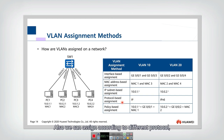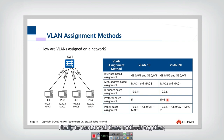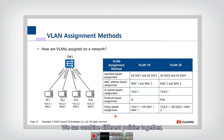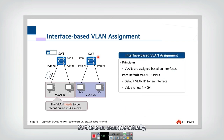We can also assign according to protocol — for example, if two PCs work on IPv4 and two work on IPv6, we can assign VLANs based on that difference. Finally, we can combine all these methods using policy-based assignment, combining IP address, interface, and MAC address to assign devices into different VLANs.